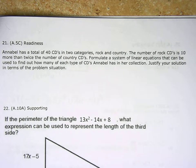Number 21 says, Annabelle has a total of 40 CDs in two categories, rock and country. The number of rock CDs is 10 more than twice the number of country CDs. Formulate a system of linear equations that can be used to find out how many of each type of CDs Annabelle has in her collection. Justify your solution in terms of the problem situation.